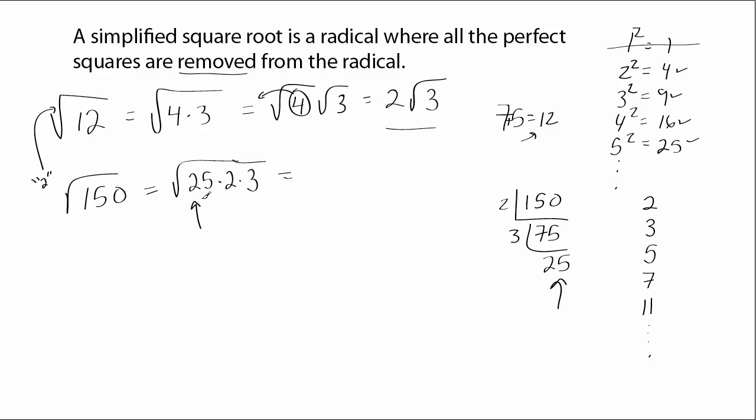So 150 can be broken down into 25 times 2 times 3. And there's that perfect square. Now with those rules of radicals, I can break down even further, where I'm going to take the square root of 25 and then the square root of 2 times 3. We know what the square root of 25 is. It's going to be 5. And the rest just stays inside the radical. 2 times 3 is 6.